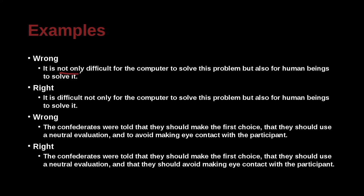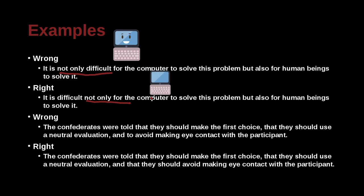It is not only difficult for the computer to solve this problem, but also for human beings to solve it. The corrected version: it is difficult, not only for the computer to solve this problem, but also for human beings to solve it. The wrong version sounds like the computer can do other things besides finding it difficult. The correct version makes clear this is a problem that is difficult for both computers and humans.